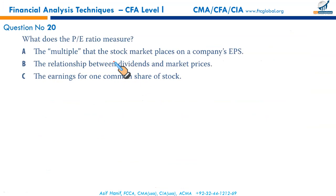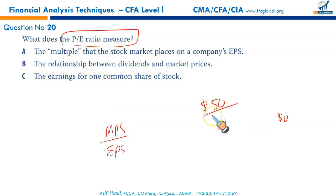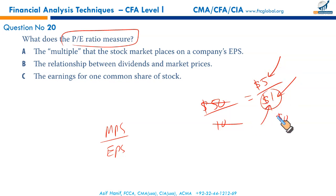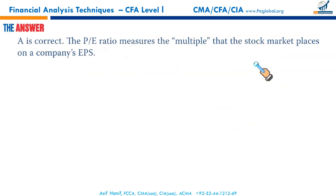What does the PE ratio measure? If a company's shares trade at $50 and EPS is $10, PE = market price per share / earnings per share = 5. This means as an investor you are willing to pay $5 for every $1 of earnings — paying 5 times the EPS. This multiple reflects the market's expectation that the company will do well in the future. A is the right answer.